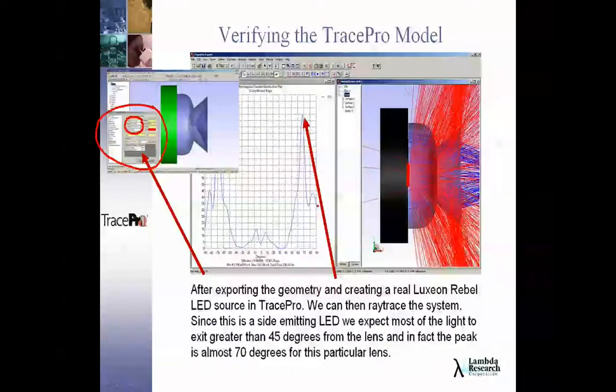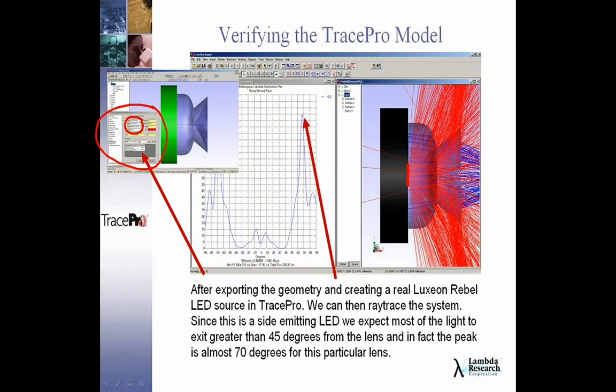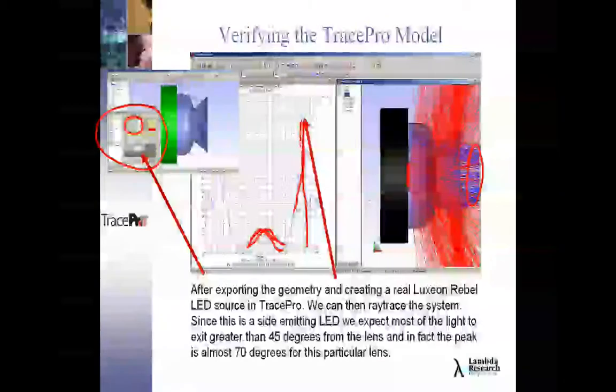Before I do that, I'm going to ray trace it to make sure that this is indeed a side-emitting LED. Yes, I have some energy here that's coming out. I'm going to want to get rid of this hump and have light coming out here at about 70 degrees, so it's going to be a nice, tight peak.